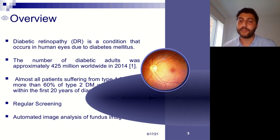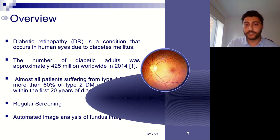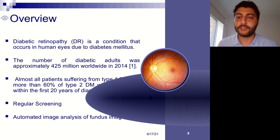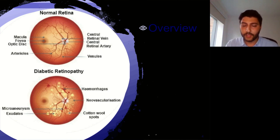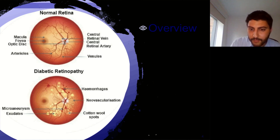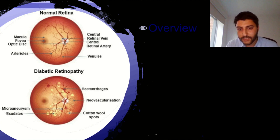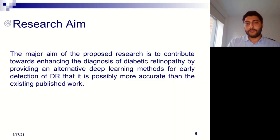Therefore, automated image analysis of fundus images using machine learning and AI techniques can automate this process and act as a decision support system for ophthalmologists — including early-career ophthalmologists or non-experts. This slide shows a normal retina with healthy anatomical parts, and below it a diabetic retinopathy fundus photograph showing red spots, yellow spots, and other lesions — signs of blood leakage — which, if they develop further, will lead to blindness.